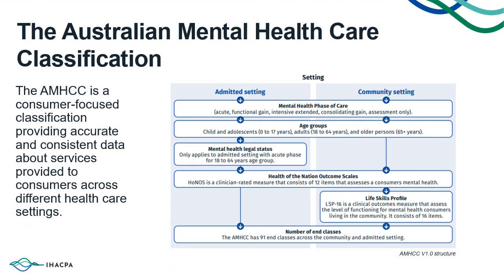The Australian Mental Health Care classification, also referred to as the AMHCC, is a clinically relevant classification that explains resource consumption at the consumer level. The AMHCC incorporates the following variables: setting, mental health phase of care, age group, health of the nation outcome scales (referred to as HoNOS), mental health legal status, and the life skills profile.